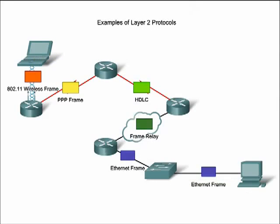In a TCP/IP network, all Layer 2 protocols work with the internet protocol at Layer 3. However, the actual Layer 2 protocol used depends on the logical topology of the network and the implementation of the physical layer. Layer 2 protocols that will be covered in CCNA courses include Ethernet, Point-to-Point Protocol or PPP, High-Level Data Link Control or HDLC, Frame Relay, and Asynchronous Transfer Mode or ATM.